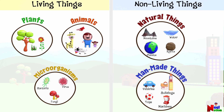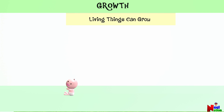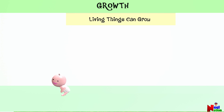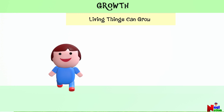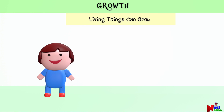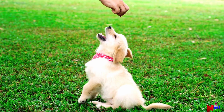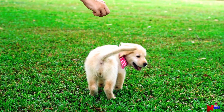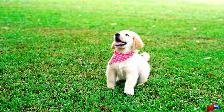Let's find out how living things and non-living things are different. Growth! Living things can grow. Growth is a super cool thing that living things can do — they can grow and change over time. It's like when you start out as a tiny baby and then as time goes on you get bigger and taller. Animals like kittens or puppies do the same thing; they start out small and grow up into big cats or dogs.